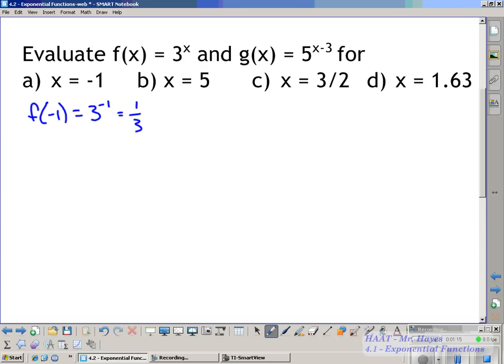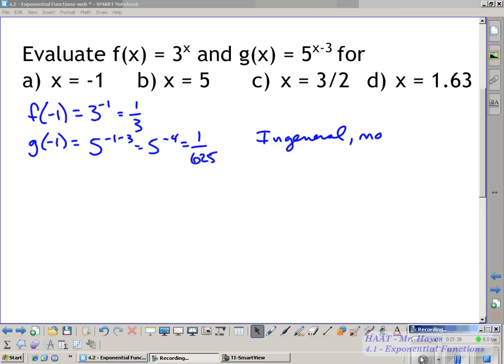All of your exponent rules that we did back earlier, you're going to have to go through and review. There's a couple more that we'll talk about in a little bit. So g of negative 1 is going to be 5 to the negative first minus 3 power. That's going to be 5 to the negative fourth. That's going to be 1 over 625. No decimals, okay? In general, no decimals.